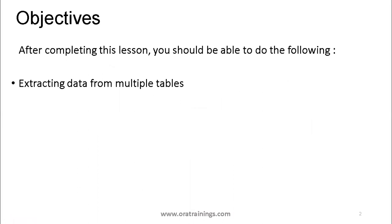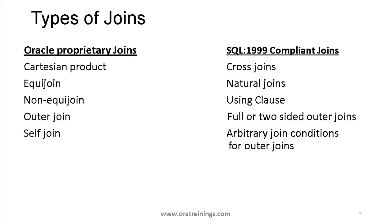We should be able to understand how to extract data from multiple tables. We have different types of joins in Oracle. As per the SQL 1999 standard there are similar joins, but Oracle has a different naming convention. We'll follow Oracle proprietary join rules: cartesian product join, equi join, non-equi join, outer join, and self join.